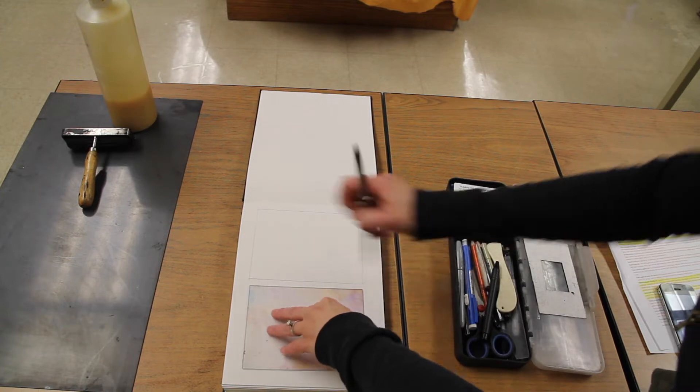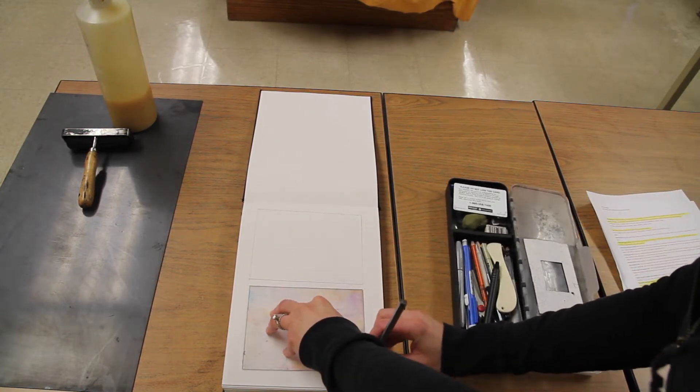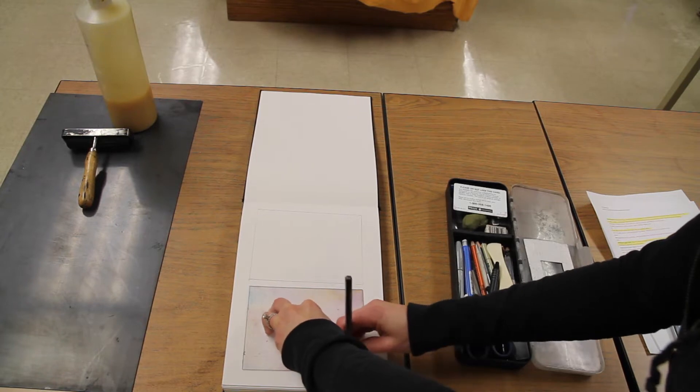You can even sketch it twice if you'd like, at least for these small ones. After you have traced around the perimeter of your plate to give you a place to plan...